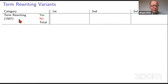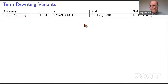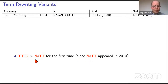The first category is standard term rewriting, where tools can say yes, no, or nothing sensible like maybe or timeout. The results show that AProVE said yes 2033 times, NUT said yes 864 times, and so on. The overall score is the sum of yes and no answers. What is remarkable is that TTT2 overtook NUT for the first time. NUT appeared in 2014 and since then was always number two in this category, but TTT2 managed to solve five more examples than NUT.